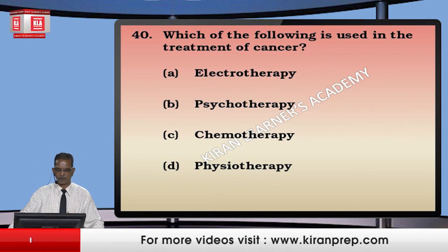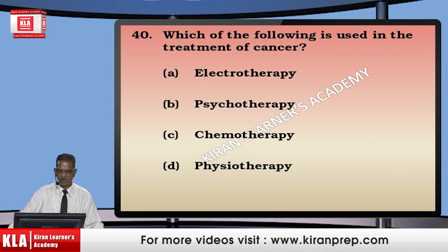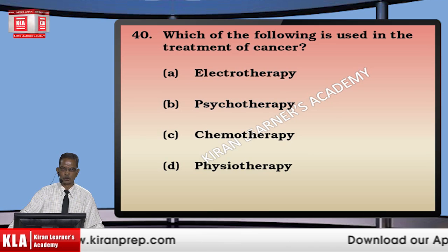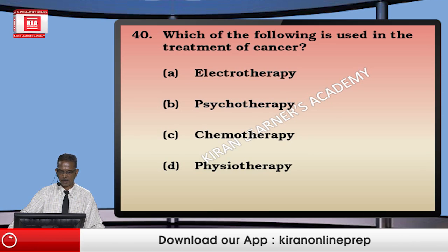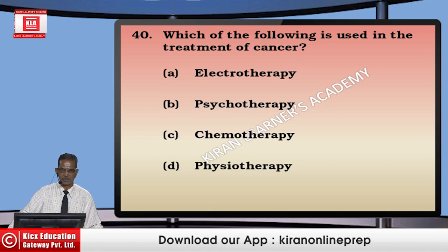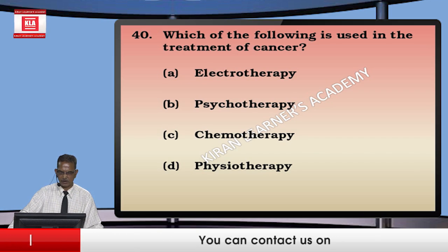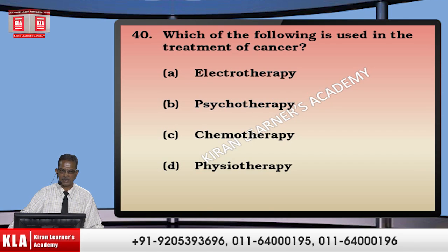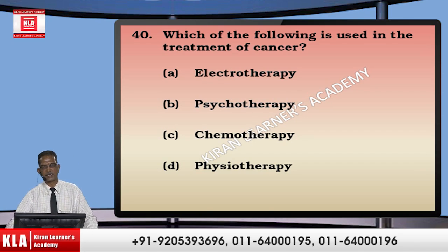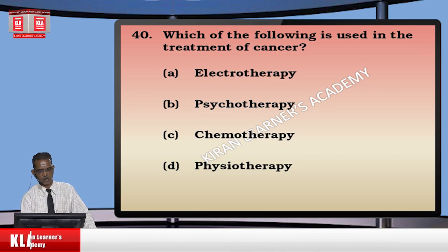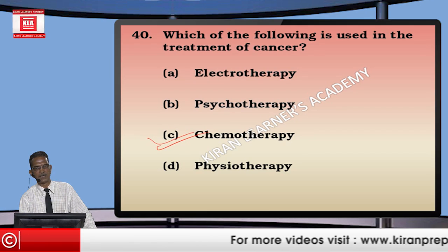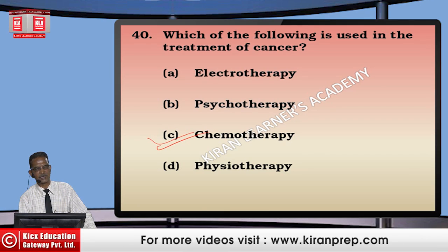Which of the following is used in the treatment of cancer these days? Electrotherapy uses electrical shocks and is mostly used for mental disorders. Psychotherapy addresses psychological problems. Physiotherapy involves exercise. We are left with chemotherapy, which uses pills, capsules, injections, and syringes in the treatment of cancer.